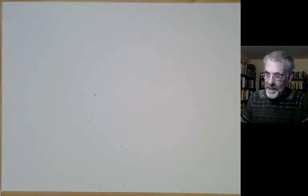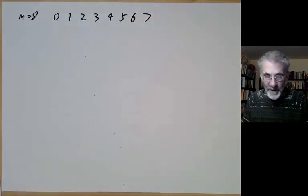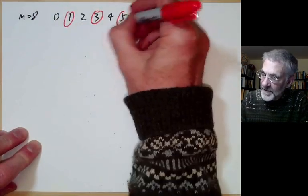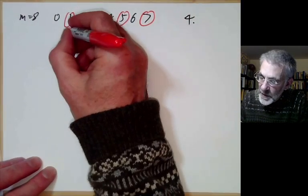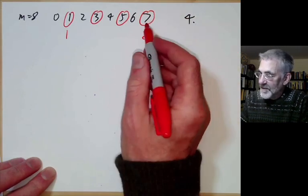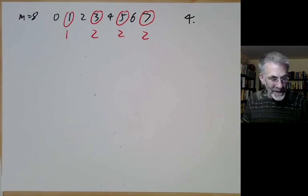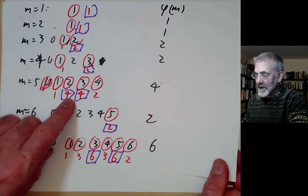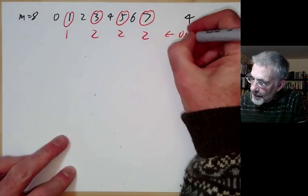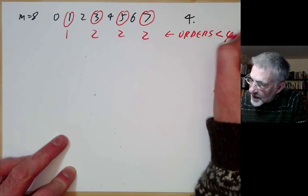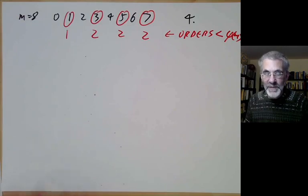For m equals 8: the co-prime numbers are 1, 3, 5, 7 and phi(8) equals 4, so every element should have order dividing 4. Order of 1 is 1; 7 squared is minus 1 so order 2; but 3 and 5 also both have order 2, not 4. So nothing has order equal to phi(8). This is the first case where Euler's theorem isn't the best possible — sometimes we can find a better exponent.